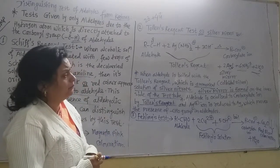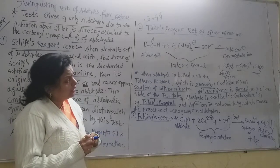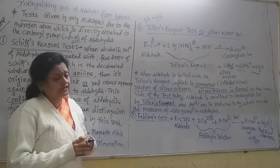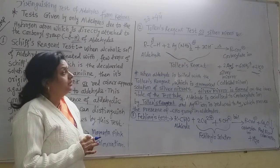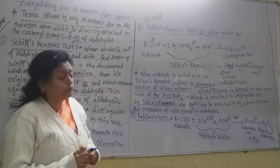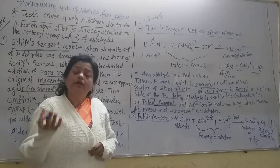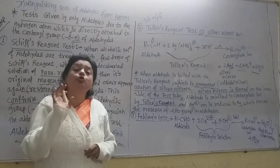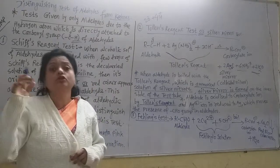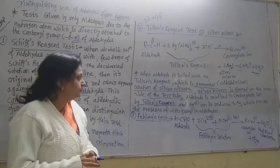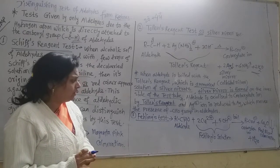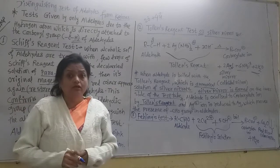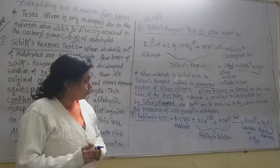Silver gets reduced and the aldehyde gets oxidized — that is the reaction. If we do the same Tollens' reagent test with ketones or carboxylic acids, they do not give this test — there is no formation of silver mirror on the inner side of the test tube. The third test is the Fehling's solution test.